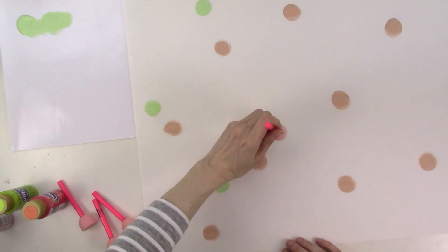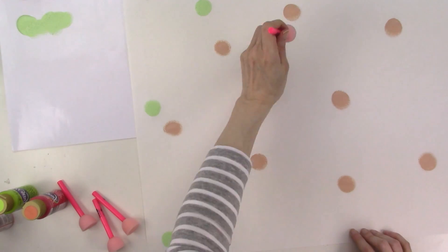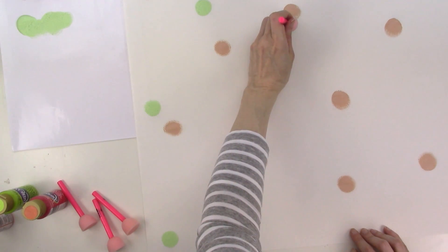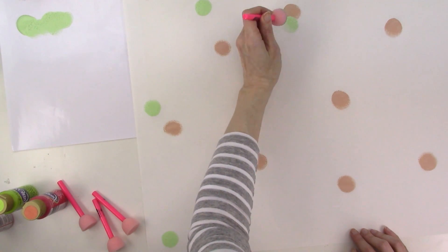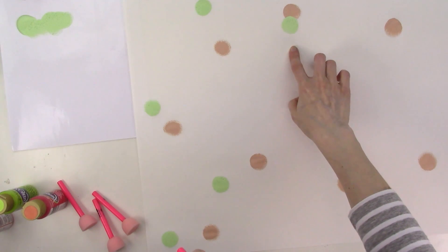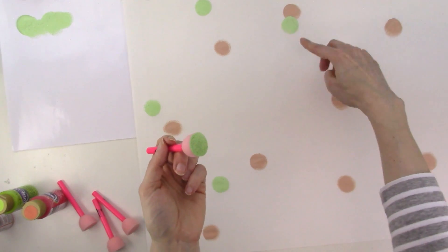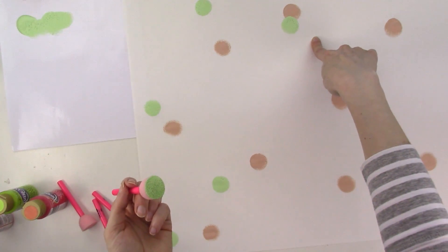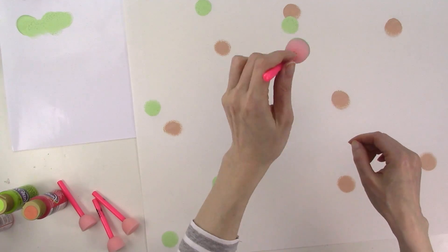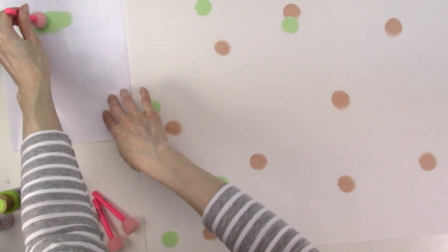Once I'm done making dots with the first color, I'm going to follow the same process with the second color. I didn't allow the first color of paint to dry before moving onto the second color, but if I'm careful about it, I can partially overlap dots to create a more interesting look. Just be sure not to rub the pouncer around as you're pressing it over the dot in the first color. If you press down firmly, then lift the pouncer straight up, you shouldn't have an issue with the first paint color transferring onto your pouncer.